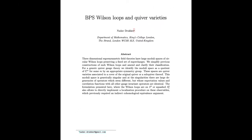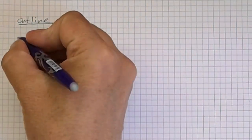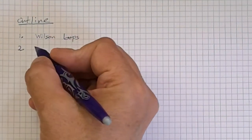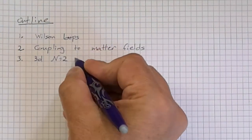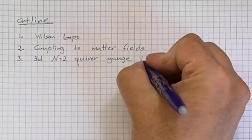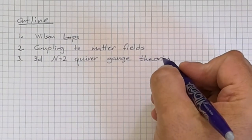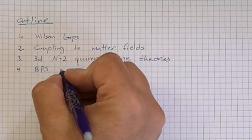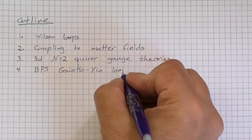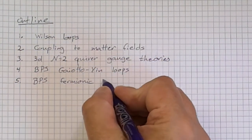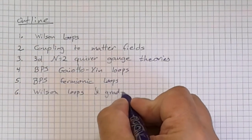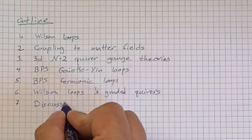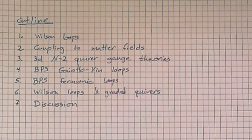For Etoff Loops, for the definition of Wilson Loops, press 1. For coupling to more matter fields, press 2. If you are interested in 3D n equal to 2 quiver gauge theory, press 3. For BPS Gaiotto-Yin Wilson Loops, it's 4. If you have issues with BPS fermionic Wilson Loops, press 5. Everything related to Wilson Loops and graded quivers, it's 6. For discussion, all other issues, or to speak to a customer representative, please press 7.